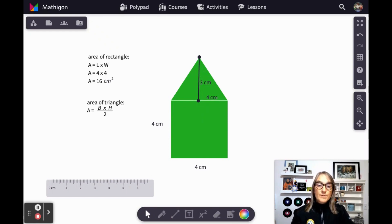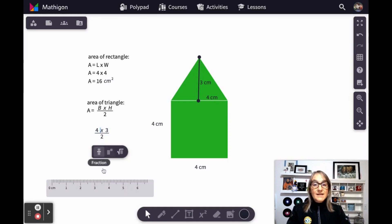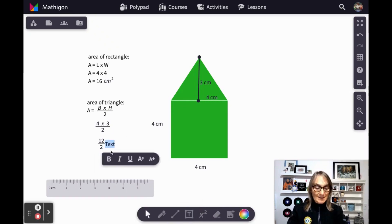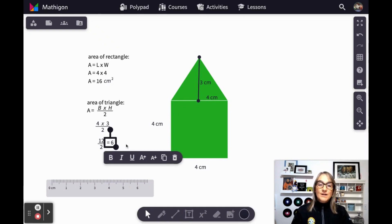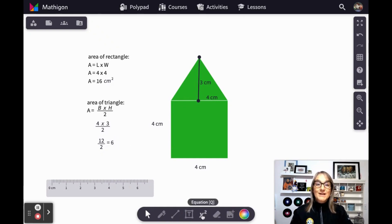So now let's use our formula to help us figure out the area of the triangle. So if we say the area of the triangle is base times height divided by two, our base is four, four times three divided by two is the same as saying 12 divided by two, which equals six. So we can say that our area of our triangle is six square centimeters.